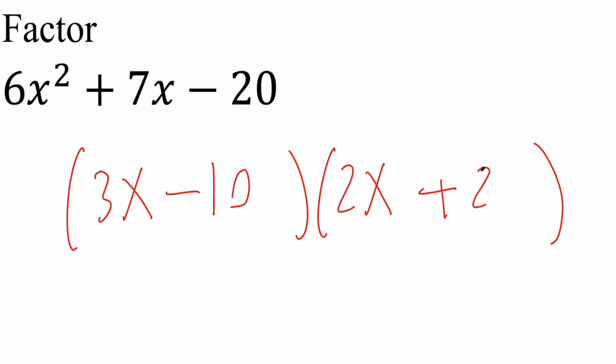So 3x times 2 is going to give us 6x. 2x times negative 10 would give us negative 20x. So negative 20x plus 6x, is it 7x? No it's not. So this method is not correct. Now let's try something else.